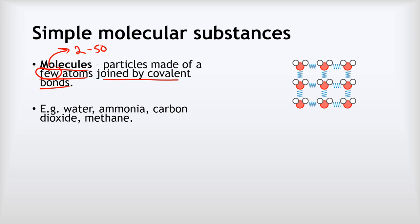For example, we might have water. I've got some water here, we'll talk more about that in a second. But ammonia, carbon dioxide, methane, these are all simple molecular substances and they all have this kind of structure.